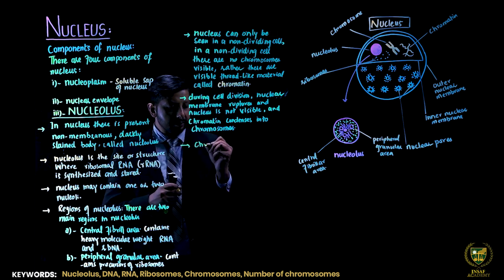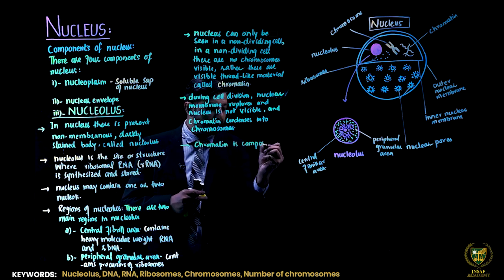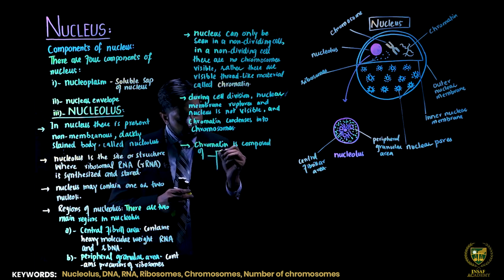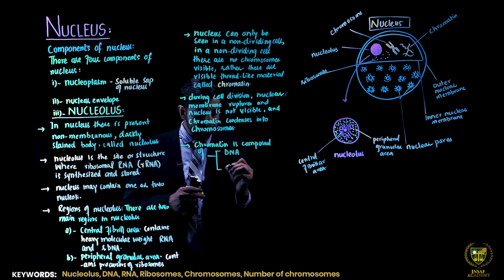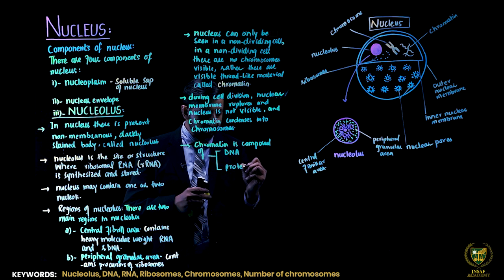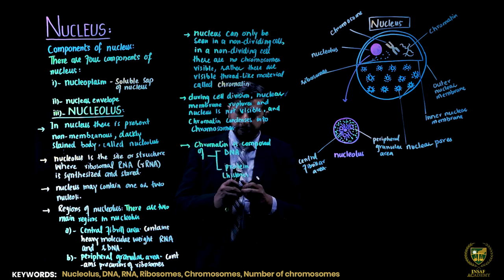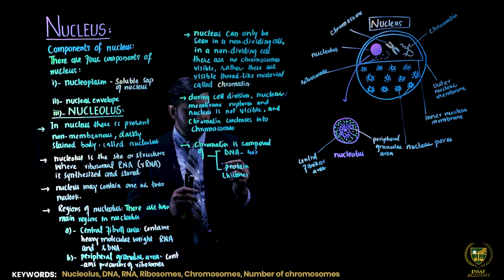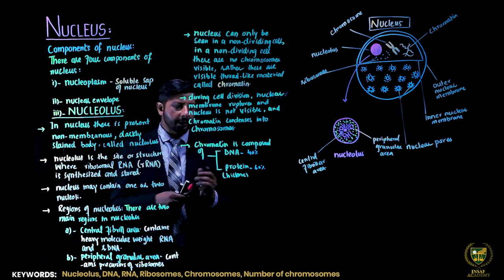Now, the chromatin. The chromatin is composed of: number one, DNA — up to 40%; and number two, protein — which is the histone protein — up to 60%. So chromatin consists of DNA and histone proteins with their strands.